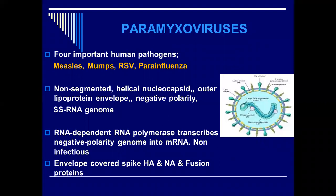The negative-strand RNA polarity viruses cannot replicate straightaway. Unlike DNA which makes RNA and RNA makes proteins, the negative-strand RNA cannot make proteins directly — it cannot be translated directly. The negative-polarity RNA first has to be changed into positive-polarity RNA, and then this positive-polarity RNA makes mRNA and proteins.